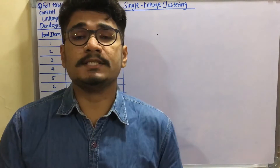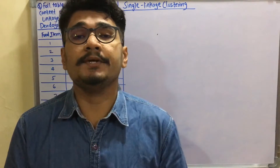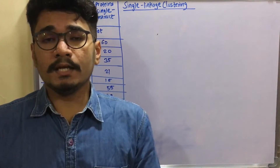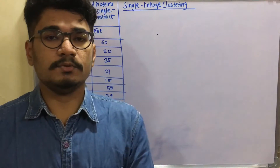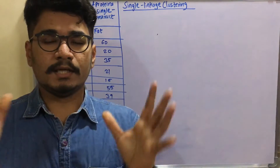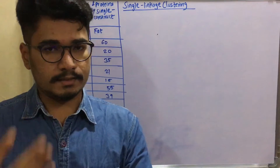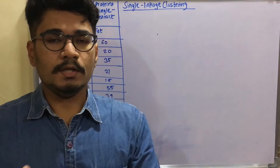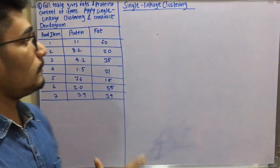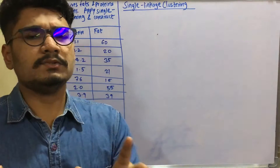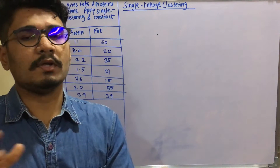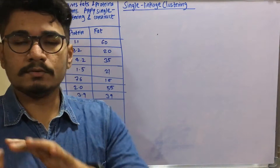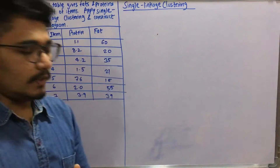Welcome to another video on data mining. Today we'll be solving a problem based on single linkage clustering, which is a type of hierarchical clustering. Techniques include single linkage, average linkage, and complete linkage. We'll solve this problem similarly to k-means — by using Euclidean distance to calculate the distance matrix. Let's get started.